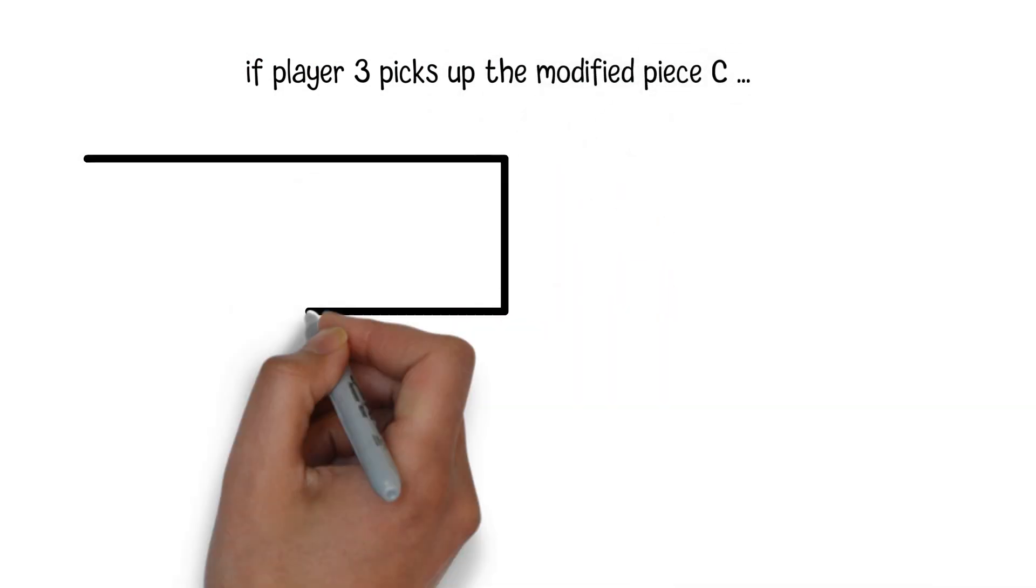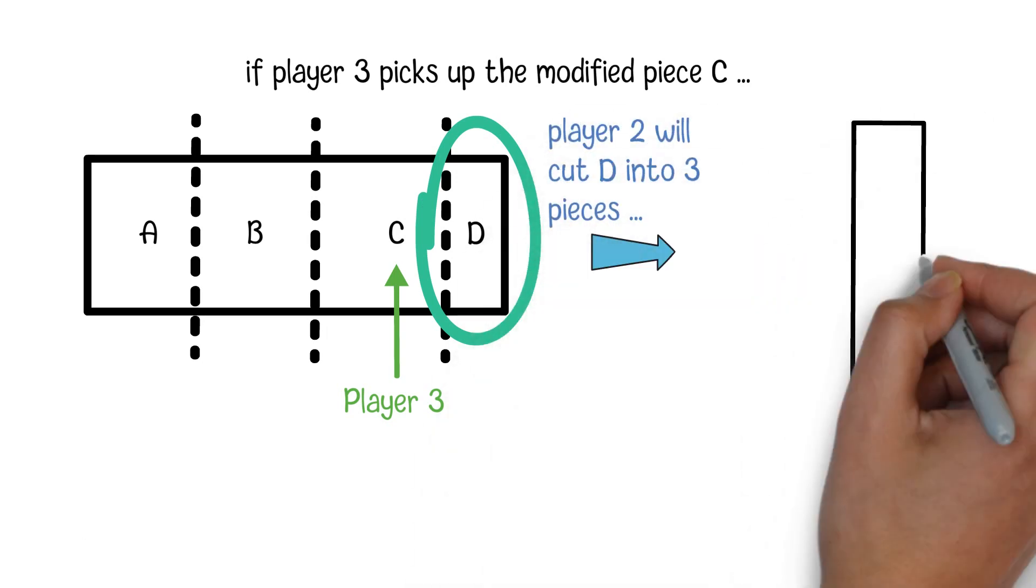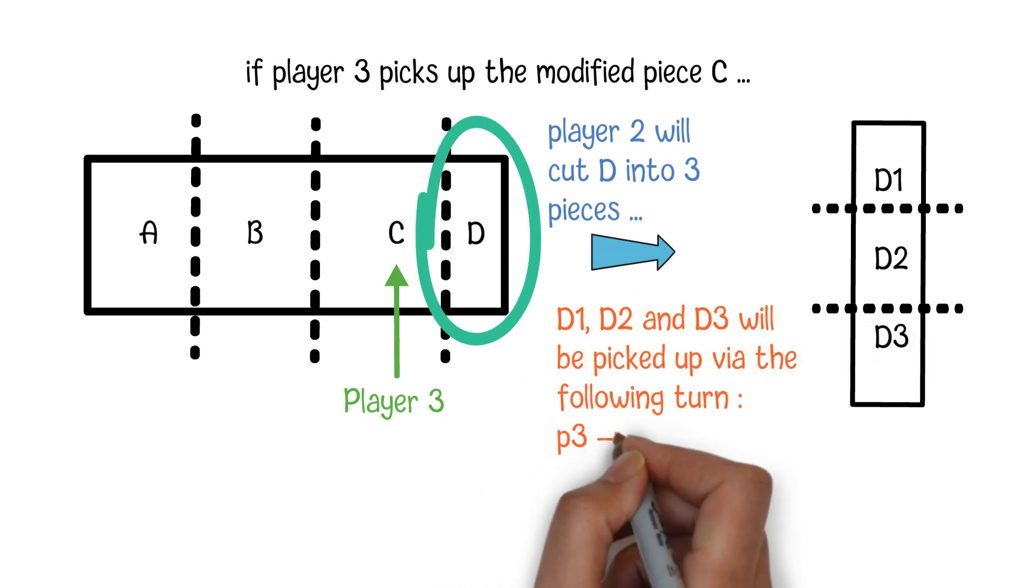The fourth step, if player 3 picks up the modified piece C, then player 2 will cut the extra piece D into three pieces, say D1, D2 and D3, which will be picked up via the following turn: player 3, player 1 and player 2.